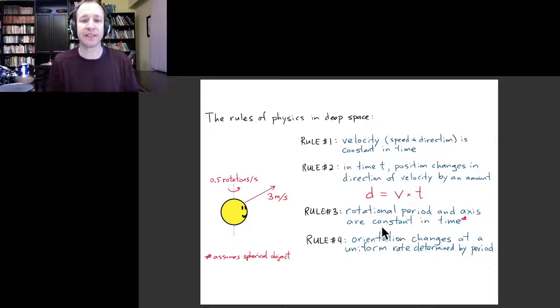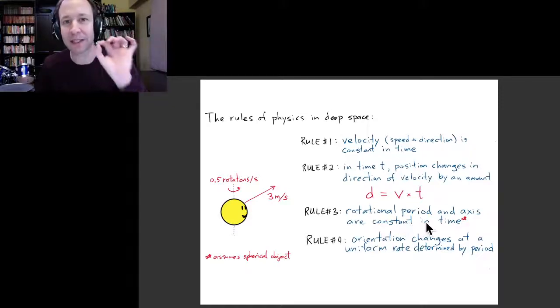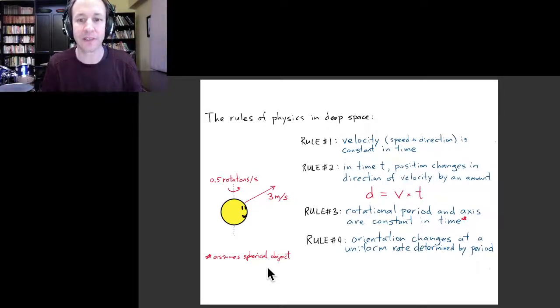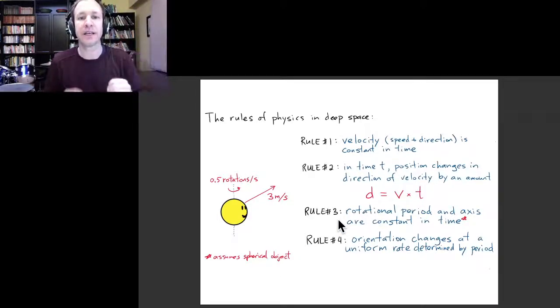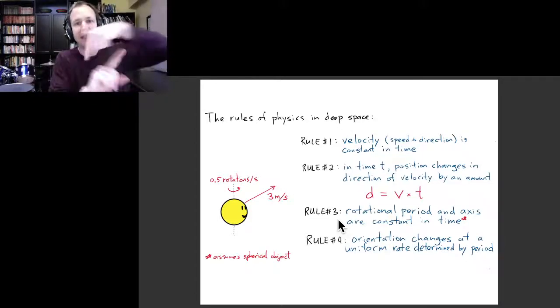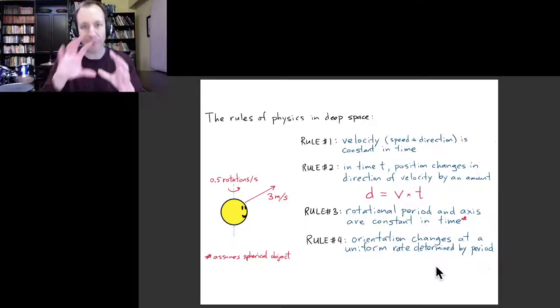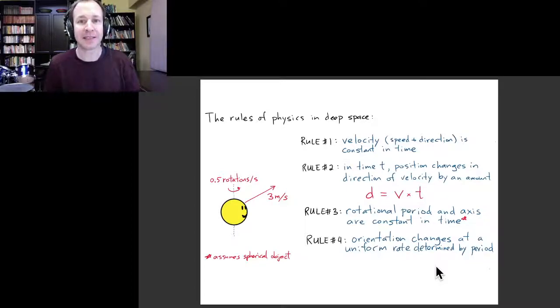Similarly, what we noticed is that the objects seem to be rotating about an axis that did not change. I should say at this point, that's something special to spherical objects, and that's all we'll need to consider for now. So let's make that assumption that we're talking about spherical objects. And then this rule is basically that the rotational axis doesn't change, and that the speed that the thing was rotating around at also doesn't change with time. That's rule number three, that the rotational period and axis are constant in time. Rule number four is just about the orientation, how that changes in time. Like the position, the orientation was changing at a uniform rate, which is determined by the period of rotation. These are the simple rules of physics in outer space.